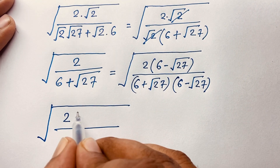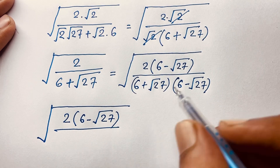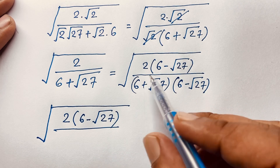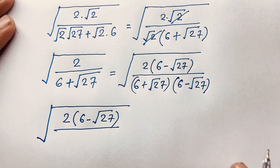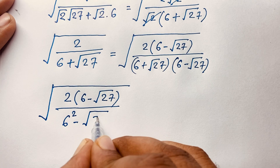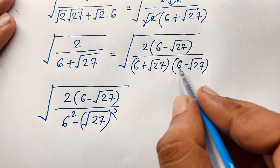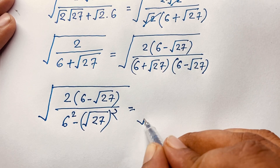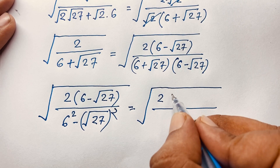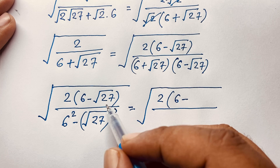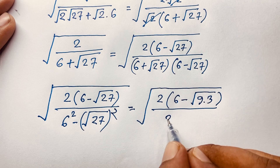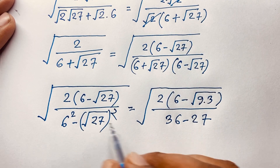The denominator is (6 plus square root 27)(6 minus square root 27). According to the formula a plus b times a minus b equals a squared minus b squared, where a equals 6 and b equals square root 27, the denominator becomes 6 squared minus square root 27 squared, which is 36 minus 27.